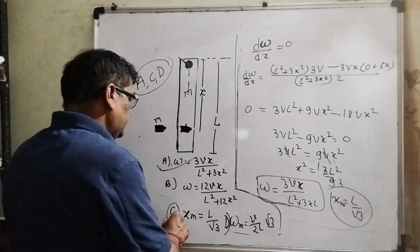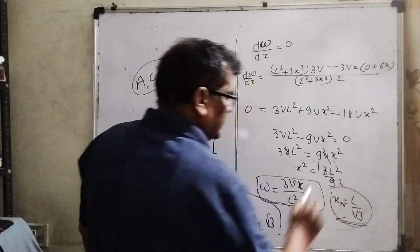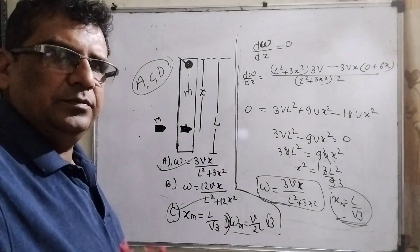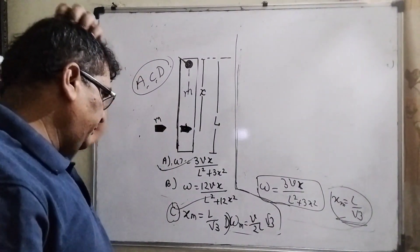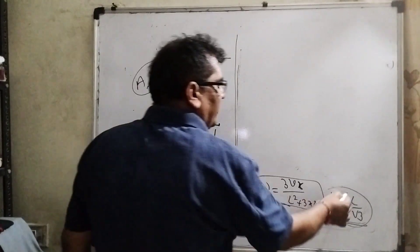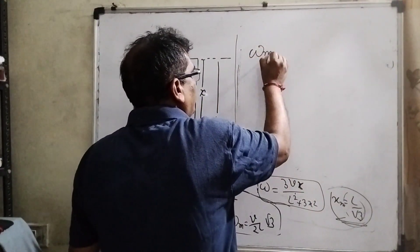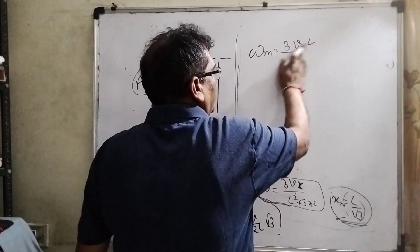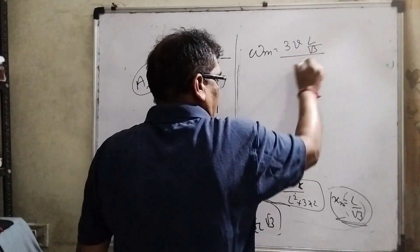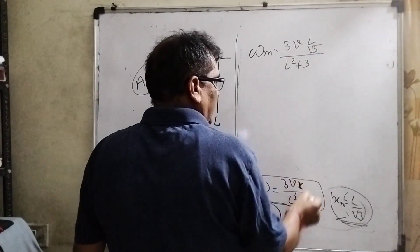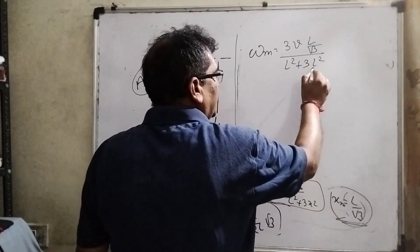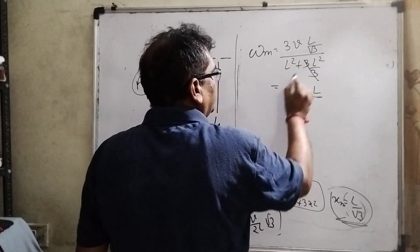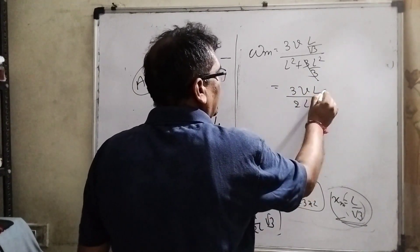Now let's see the last. B and D will be left. So now substitute the value of L in our maximum value. Then 3v, in the place of x we can put here L by root 3, and again L². 3 in the place of x² - L² and square of root 3 is 3. Then this 3 will be cancelled out and 3vL upon 2L² and this is root 3.